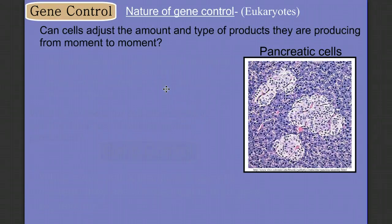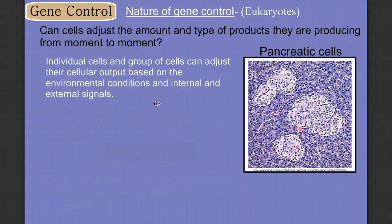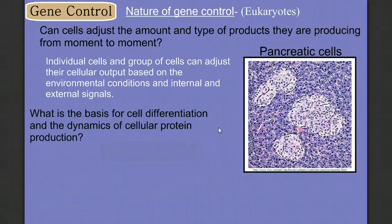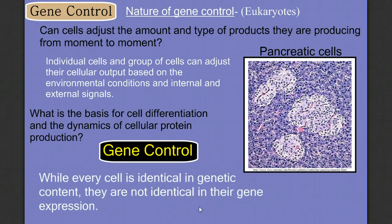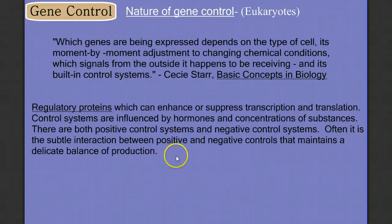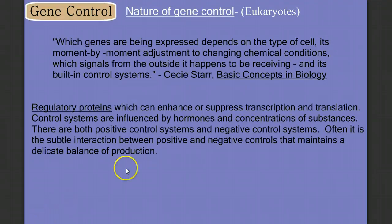But what about moment-to-moment differences? Do pancreatic cells always produce the same amount of the same digestive enzymes or hormones? It turns out that individual cells and groups of cells can adjust their cellular output based on environmental conditions, internal factors, and external signals. The basis for both cellular differentiation and the dynamics of cellular protein production is gene control. While every cell in our body has the exact same genetic content, they're not identical in their gene expression.